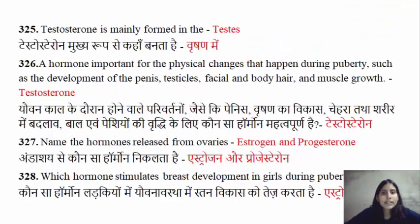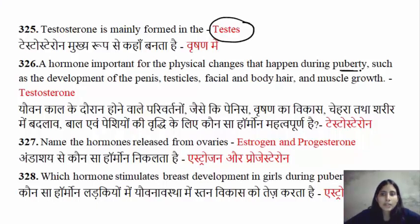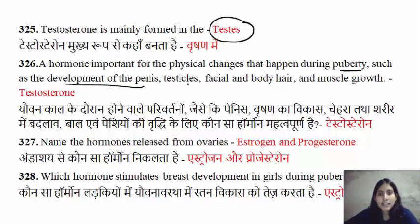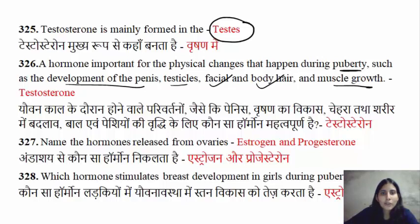Testosterone formation occurs in the testes. A hormone is important for physical changes during puberty, such as the development of the penis, testicles, facial hair, body hair, and muscle growth. These are all under the influence of hormones.